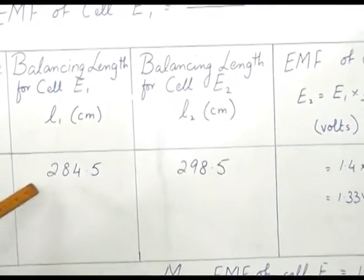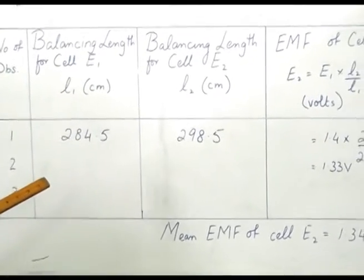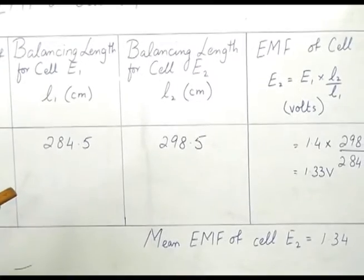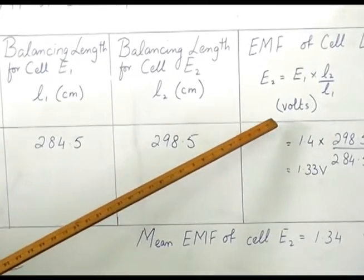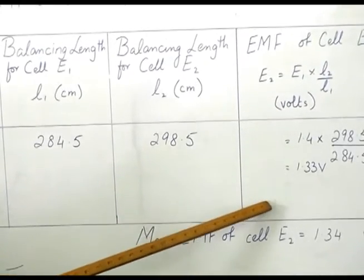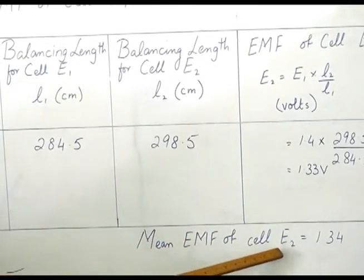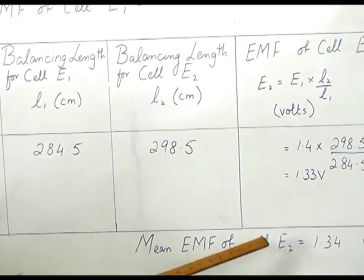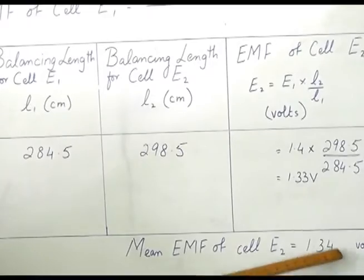This is one set of observation. We have to take two more observations by slightly changing the position of rheostat for each observation. After that, we have to take mean EMF of the cell E2. We will have three values here of E2. We will take mean of these three values, and that will be the end result. And here we have seen that it is 1.34 volts.